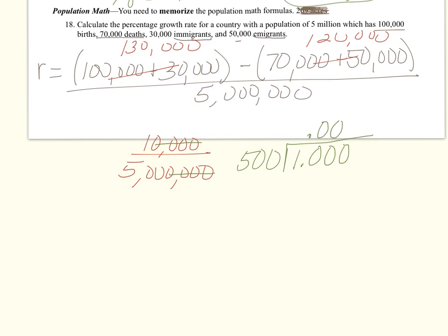Oh, it goes in twice. 500 goes into 1,000 twice. And so now I'm going to change it to a percentage. So I'm going to multiply by 100, or you can just move the decimal twice. And so my answer is 0.2%. So that is R. R is equal to 0.2%. R is growth rate.